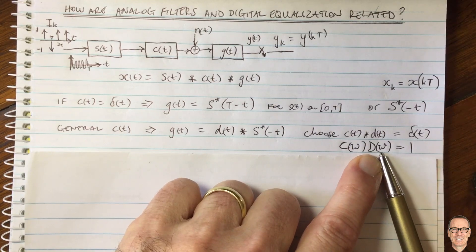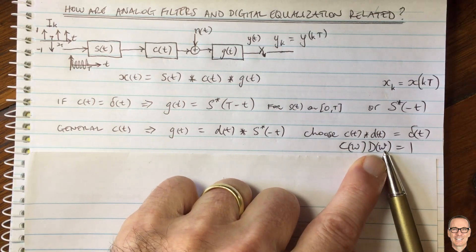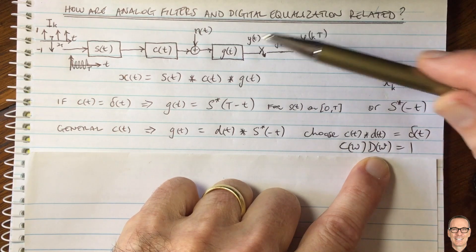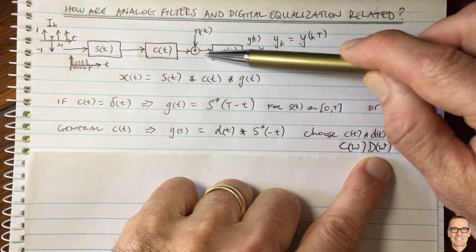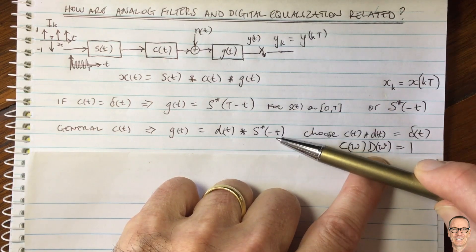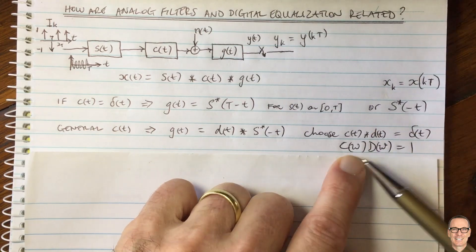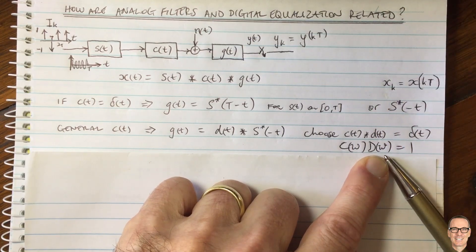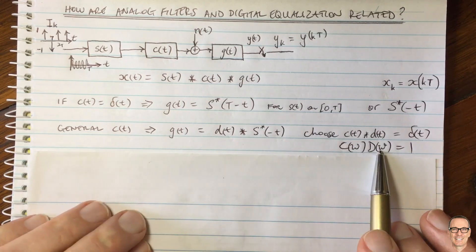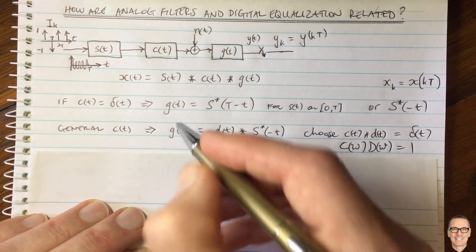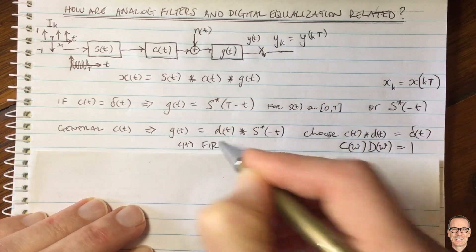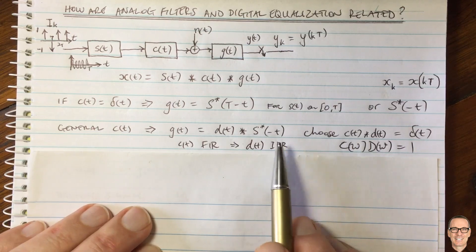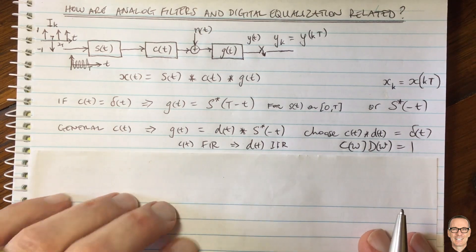If C is very small but not zero at some frequency, D would be very large there. First, that filter may be very difficult to build in analog. Second, and more critically, noise enters through that filter g, which includes d(t), so the noise passes through that large gain. If C is small at some frequency omega, D is very big, and the noise at that frequency is greatly enhanced — this is called noise enhancement. Additionally, if c(t) is a finite impulse response filter, then d(t) would need to be an infinite impulse response filter.